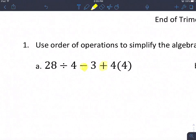So then we go ahead and circle what's left. So we have 28 divided by 4 is one term, 3 is on its own, and then the 4 times 4 over here.